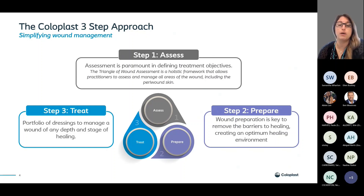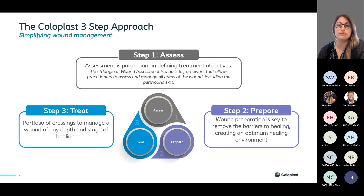We have come up with a three-step approach. Step one is assessment — the first webinar — and assessment is absolutely paramount in defining treatment objectives. Our assessment needs to be a full holistic assessment of our patient. We don't want to just look at the wound; we need to look at the patient as a whole person, find out about their comorbidities, their past medical history, and do a really robust holistic assessment. Then we move on to step two: preparation.